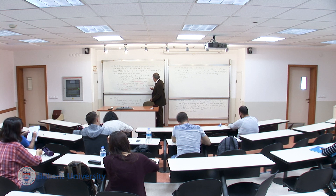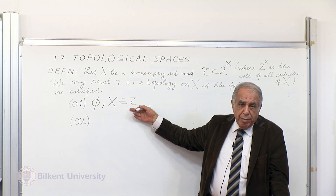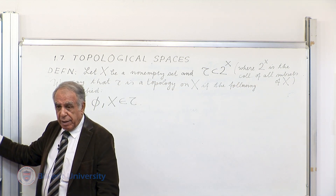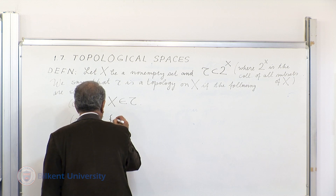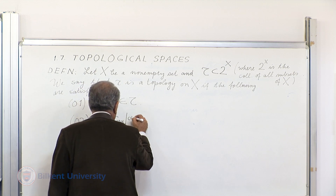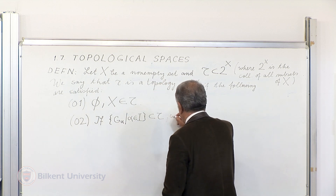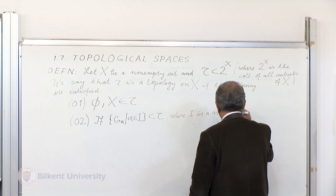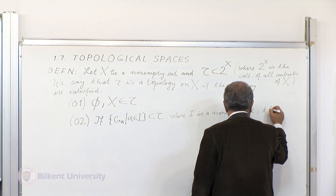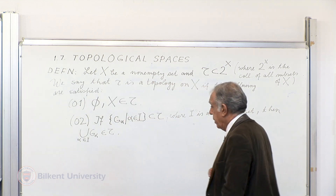If you take any non-empty collection of sets from tau, then their union should belong to tau as well. Formally, if G_alpha, alpha in I, is a sub-collection of tau — where I is a non-empty index set — then the union of G_alpha over alpha in I belongs to tau. That's the second condition.